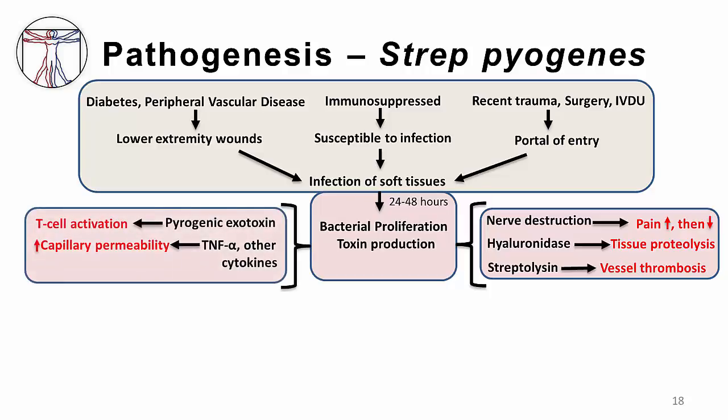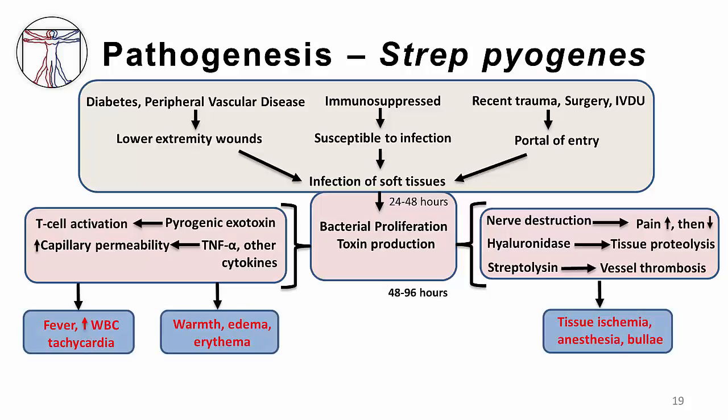Strep pyogenic exotoxin is a superantigen commonly isolated from streptococcal strains that cause severe disease. Superantigens are proteins that are able to simultaneously bind to T cell receptors and major histocompatibility complex class II molecules. Such binding activates T cells, ultimately leading to a massive release of cytokines by lymphocytes and monocytes. While normal antigens stimulate approximately 0.001% of T cells, a superantigen may stimulate nearly 20% of all T cells. TNF-alpha and other cytokines lead to increased capillary permeability and recruitment of additional inflammatory cells. Clinically, the patient may exhibit fever, elevated white blood cell count, and tachycardia.